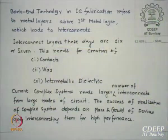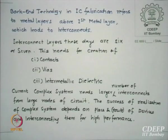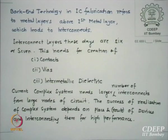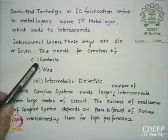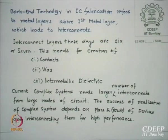Back-end issues are very worrying. Back-end technology in IC fabrication refers to metal layers above the first metal layer which lead to interconnects. These days 6 or 7 layers of interconnects, even 9, have been tried for more complex circuits. The problems in creating multiple interconnecting metal layers mean I have to talk about contacts, vias through which connections go down, and the dielectric between two metal layers — called inter-metallic dielectrics. So back-end involves contacts, vias, and inter-metallic dielectrics.